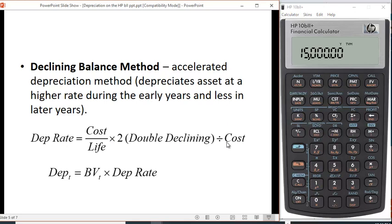The final method I want to mention is this declining balance method, another accelerated depreciation method. How fast you want it to decline depends on the number you pick here. If you pick two, it's what we refer to as the double declining balance method, and that's a very popular method. In fact, I don't think I've ever seen anything other than the double declining method in a textbook. You take the cost, divide it by the life times 2 in the double declining balance method, divided by the cost. That gives you the depreciation rate, and then you're going to multiply the rate times the book value in that period, and that'll give you the depreciation.